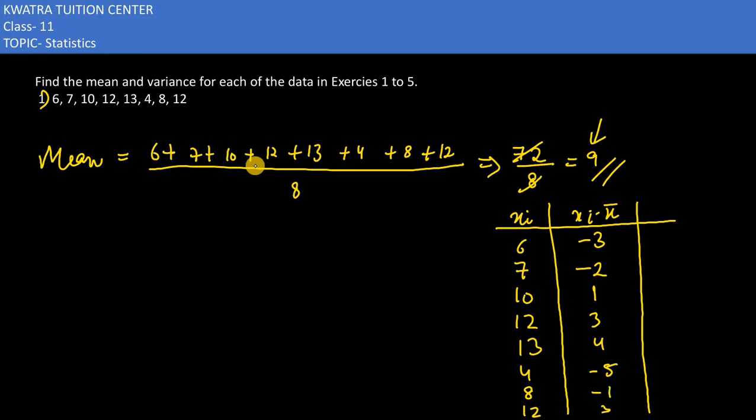4 minus 9 is -5, 8 minus 9 is -1, and 12 minus 9 is 3. Now in the next step, take the square of this row.